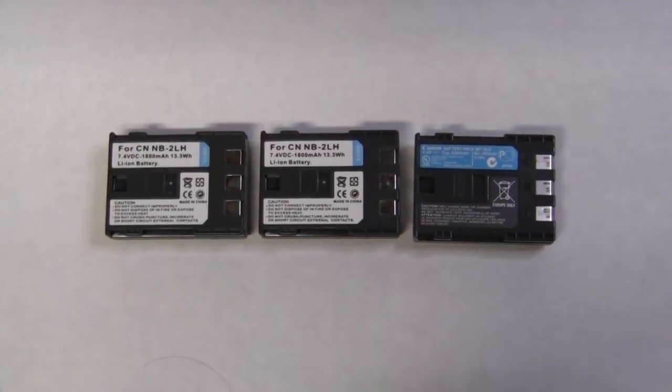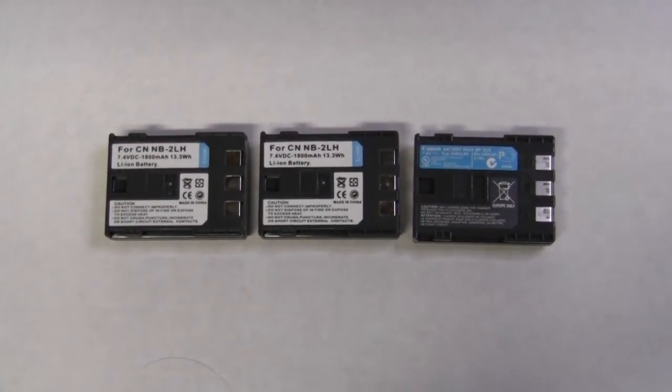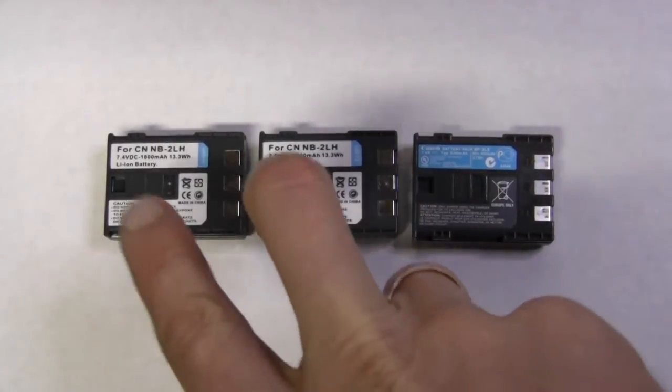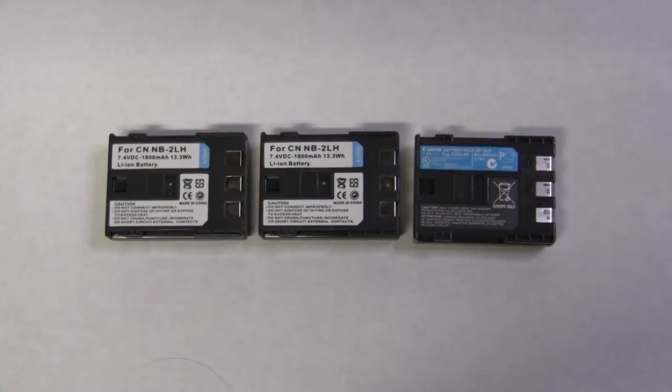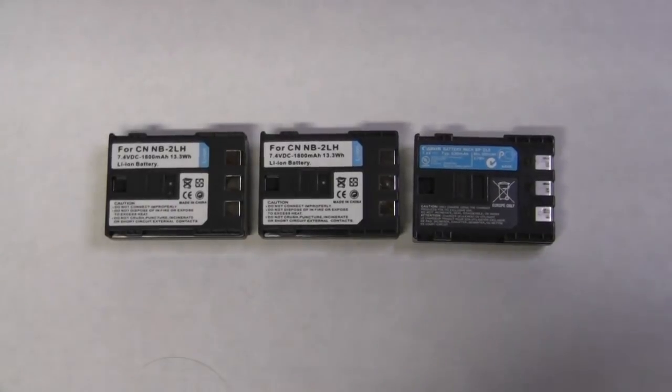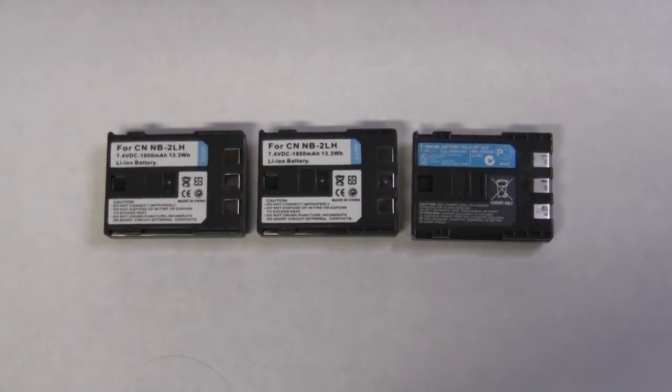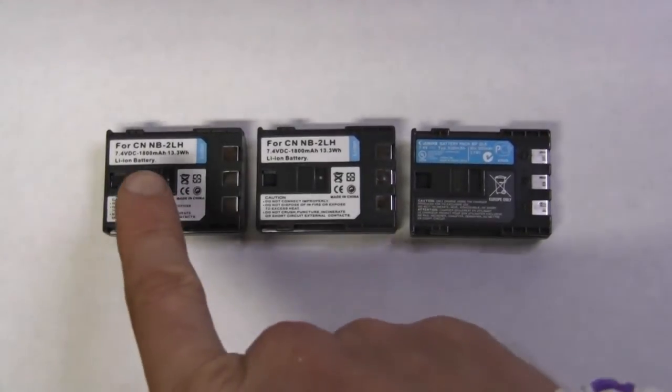Hello, this is a follow-up to a previous video when I measured these two cheap Chinese replacement batteries for Canon camcorders and digital cameras. I also measured this genuine stock Canon battery for reference. So the result was that these guys are claimed to have 1800 milliamp hours, but I measured one at 600 milliamp hours, another at 650 or something like that, which is roughly speaking one third of claimed capacity.